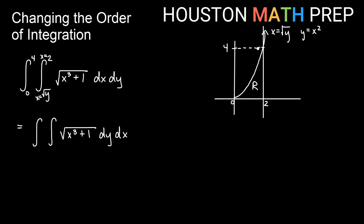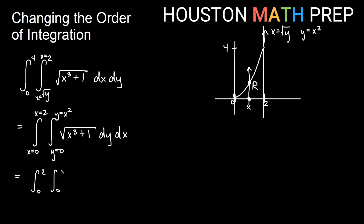Now we look at region R under the new dy dx order. We fix an x and draw through in the y direction. I enter the region on the horizontal axis at y equals 0 and exit at the curve — but it needs to be in y equals form since we're integrating dy, so I say y equals x squared instead of x equals square root y. Constant bounds for the outside: x leftmost is 0 and rightmost is 2. So the integral is from 0 to 2, from 0 to x squared, square root of x cubed plus 1, dy dx.